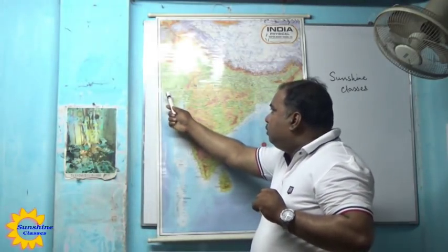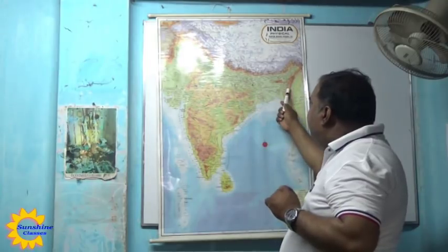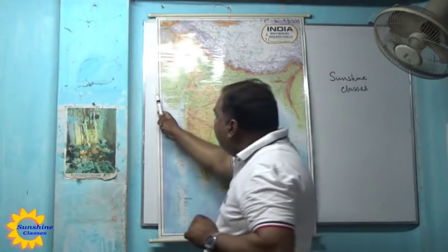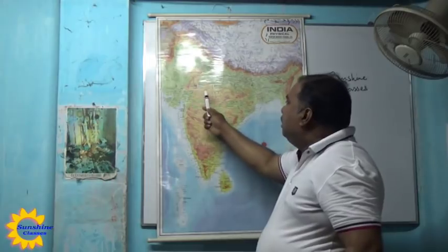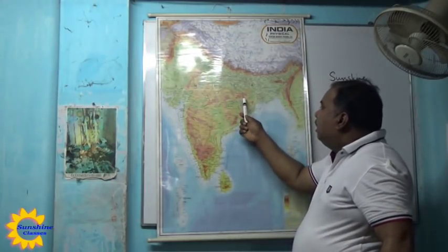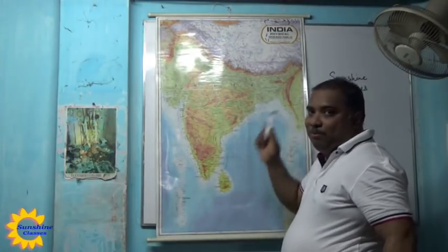During the months of April and May, the Sun shines vertically over the Tropic of Cancer. The Tropic of Cancer passes through the middle of India — through eight states: Gujarat, Rajasthan, Madhya Pradesh, Chhattisgarh, Jharkhand, West Bengal, Tripura, and Mizoram. The Sun gives its vertical rays over this area, so it is highly heated up. There is also the Thar Desert in the northwestern part of India.